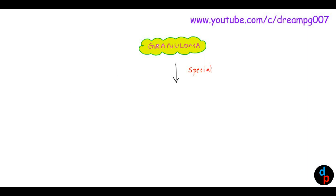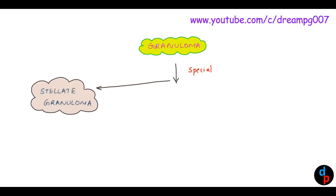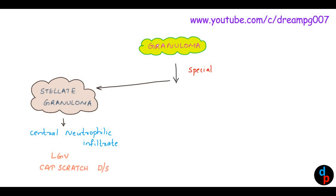Now let's have a look at the special types of granuloma. The first one is stellate granuloma. Stellate granuloma is characterized by central neutrophilic infiltrates, and it is characteristically seen in lymphogranuloma venereum and cat scratch disease.